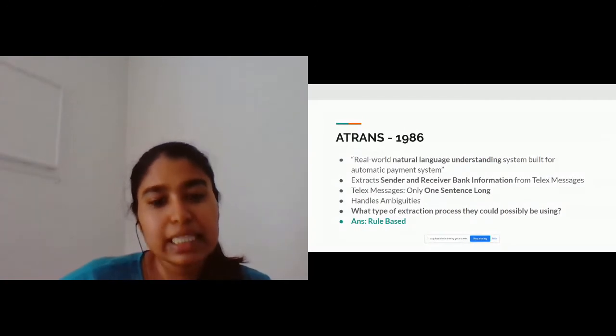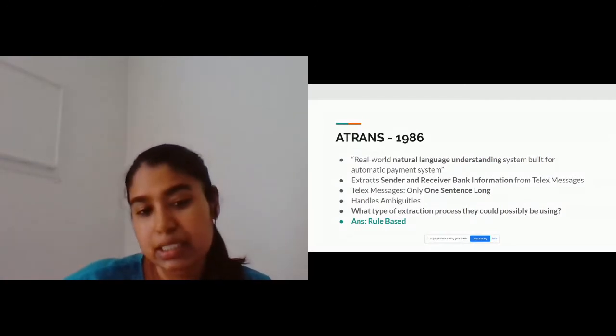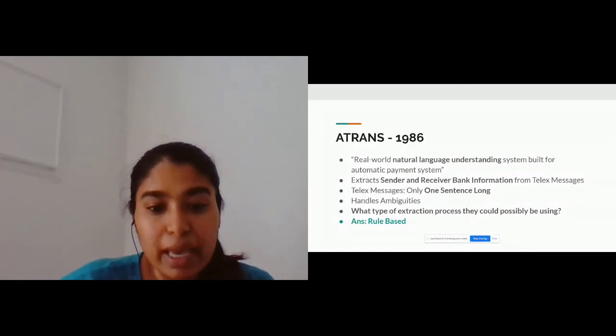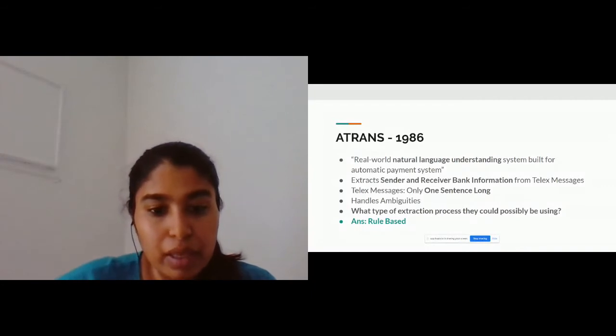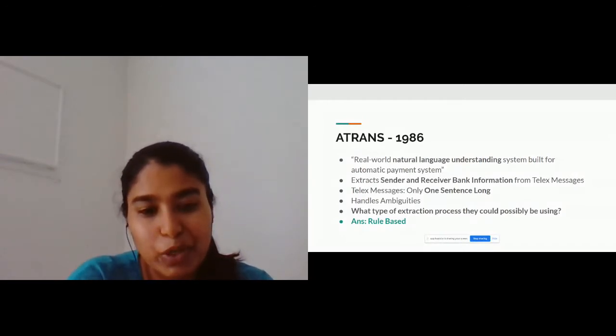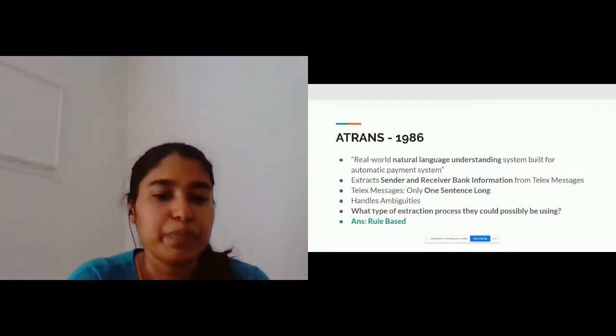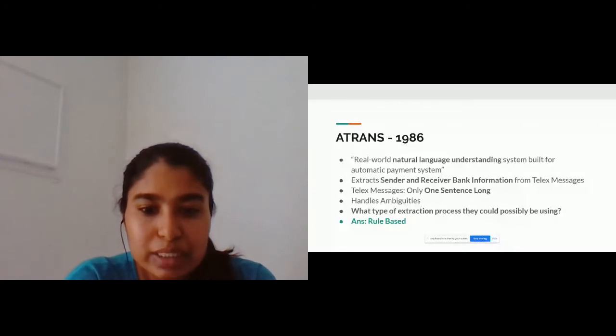So what are the interesting things about this old model which we are still discussing now? Researchers back then also faced issues with ambiguous words and they handled it by maintaining the scope. For example, if I enter into a scope of date during the telex reading, whatever number I encounter is a date, not an amount. Very impressive, right? Today also we use almost the same concept but a more advanced strategy.